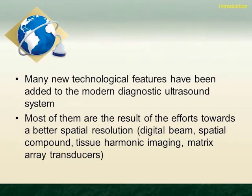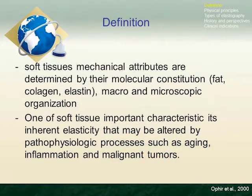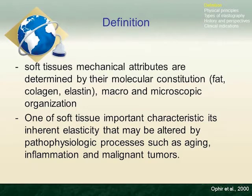Considering clinical examination, palpation is well known in medical practice. It involves the squeezing of a lump, for example, to establish whether it's hard or soft compared to surrounding tissue. We know that soft tissue's mechanical attributes are determined by molecular constitution, macro and micro structural organization. One important characteristic is inherent elasticity, which may be altered by processes like aging, inflammation, and malignant tumors.